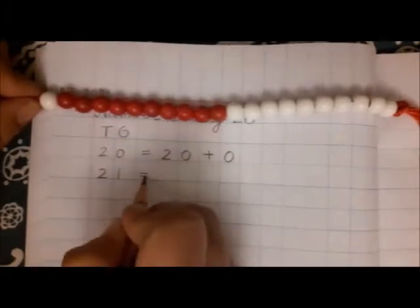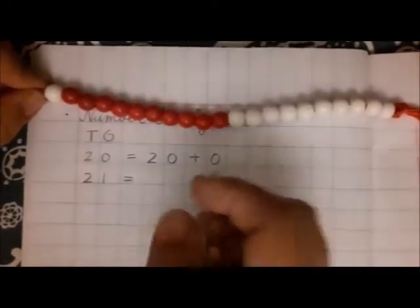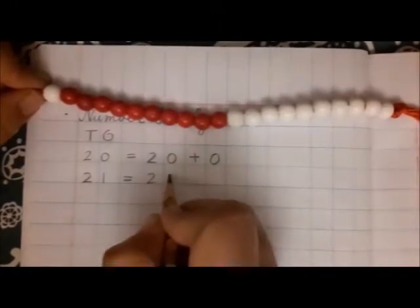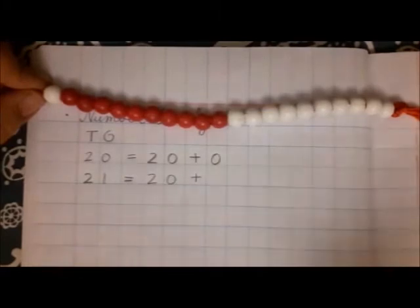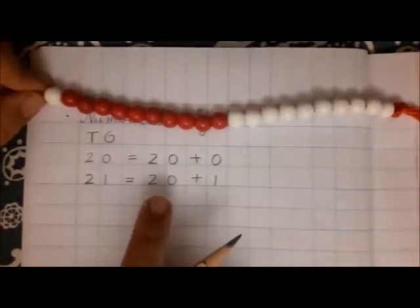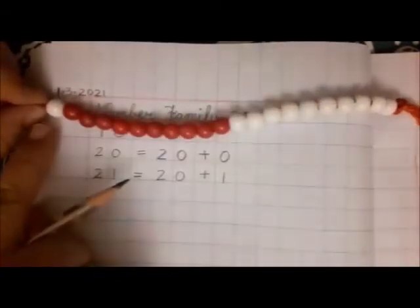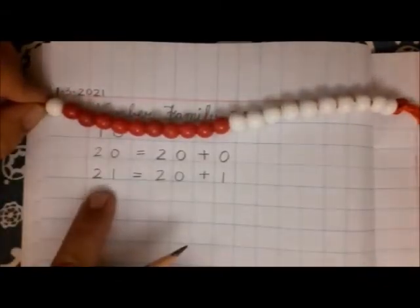So 21 is two tens and how many extra? One extra. 21 is two tens and one extra. Number 21.